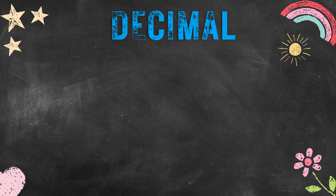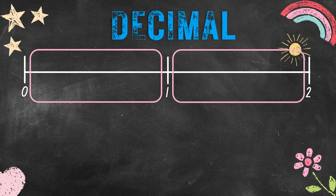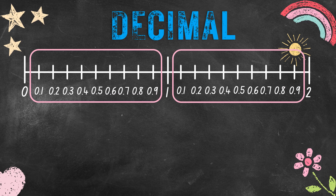When we were kids, we were taught about counting numbers — 0, 1, 2, 3, 4, 5, 6, 7, 8, 9, 10, and so on. But did you know that there are numbers in between those numbers? Yes, and we call them decimal numbers.